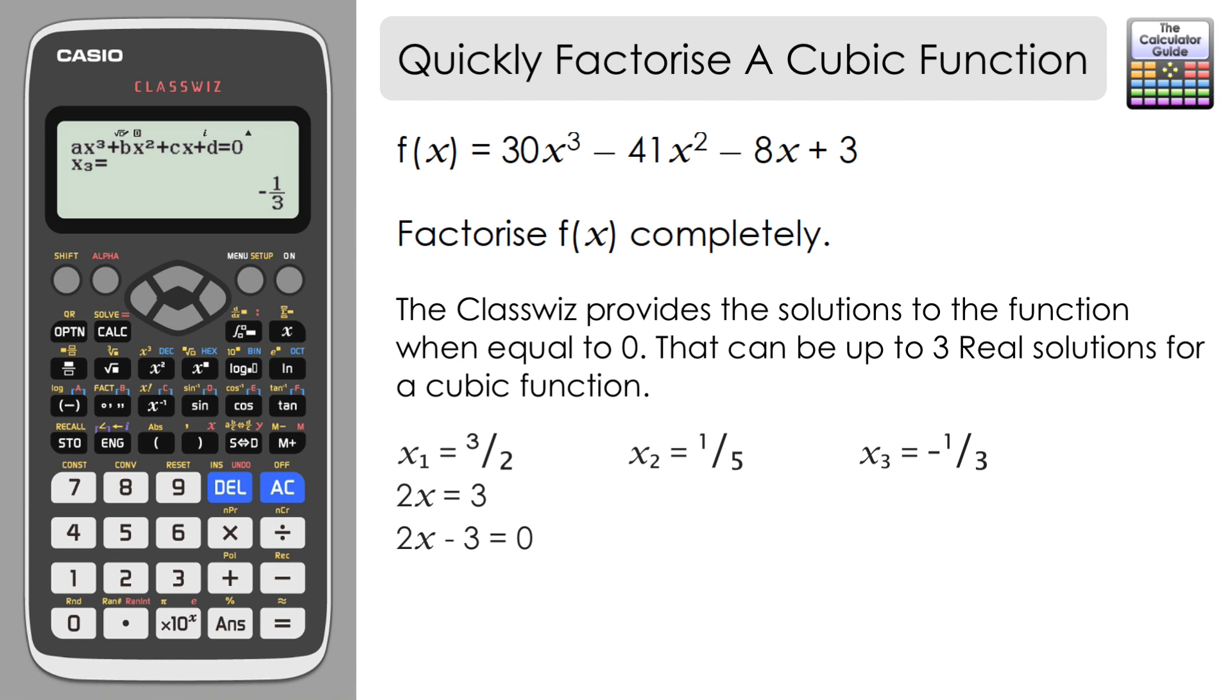In a similar way, multiply both sides by 5: 5x = 1, so 5x - 1 = 0. 5x - 1 is a factor.